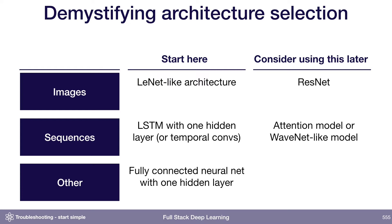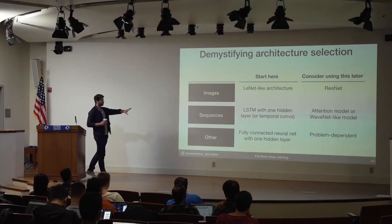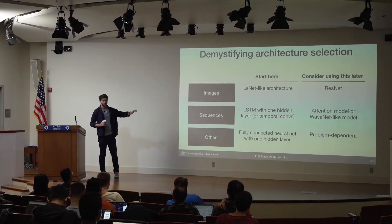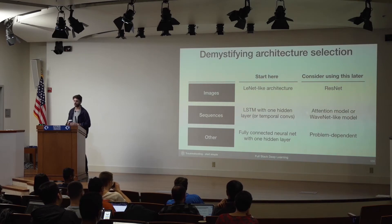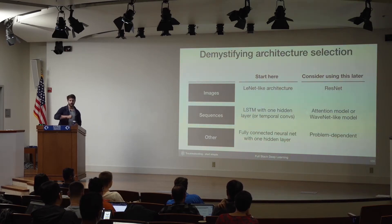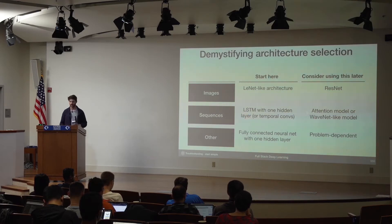For anything else, just start with a fully connected neural net with one hidden layer, and then move on to something that depends on the specifics of your problem. I'm not claiming these architectures are going to be the best for your problem, but they're going to be a good starting point and will allow you to get a baseline in place that will make implementing the state-of-the-art thing down the road much easier.